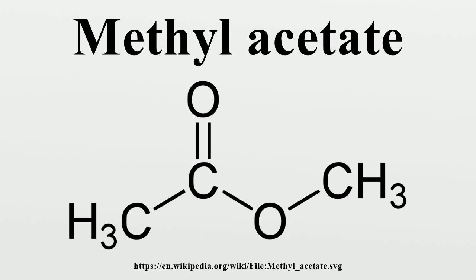Methyl acetate is produced industrially via the carbonylation of methanol as a by-product of the production of acetic acid. Methyl acetate also arises by esterification of acetic acid with methanol in the presence of strong acids such as sulfuric acid.